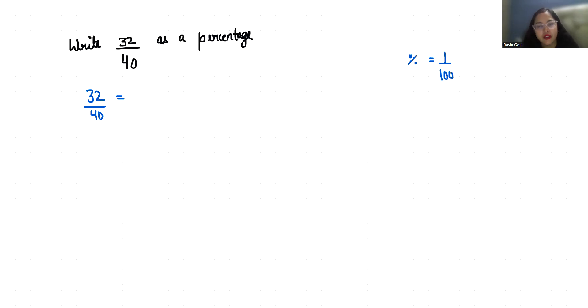Now I am going to multiply with 100 in the numerator as well as in the denominator. So 32 times 100 is 3200 by 40, and this left